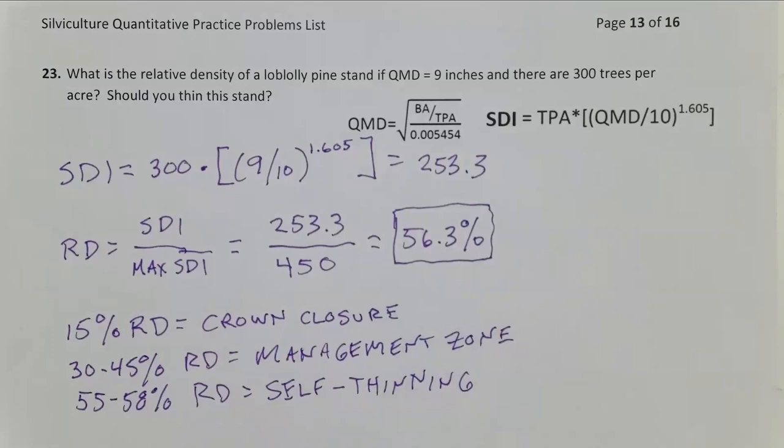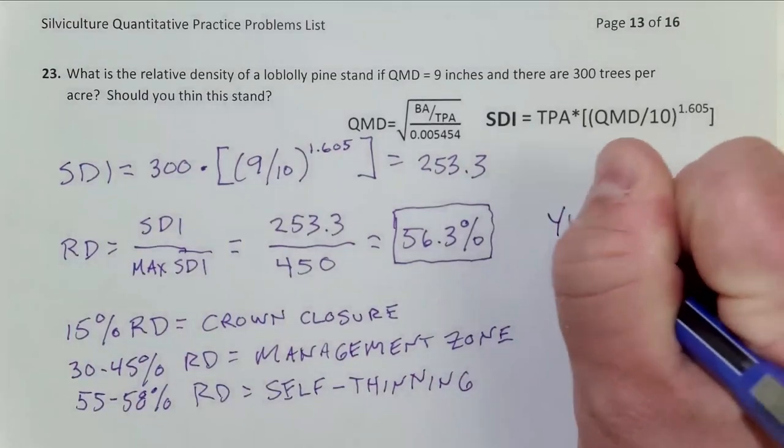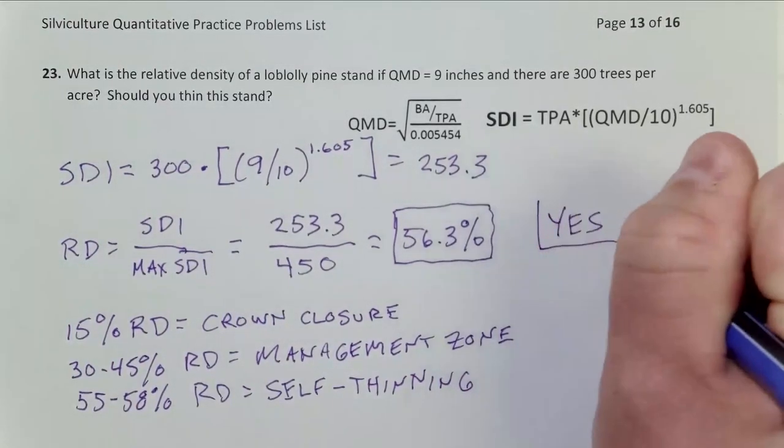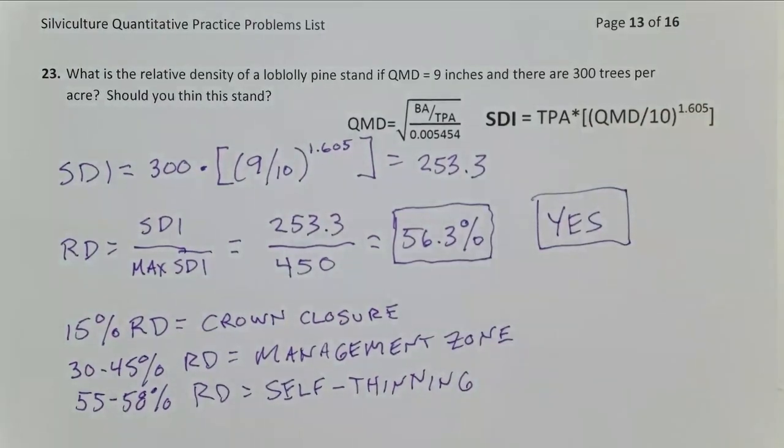And so we want to capture that mortality. We don't want a lot of mortality in our stand. We'd rather put it on a log truck and send it to the mill. So should this stand be thinned? Yes. We should thin this stand in order to prevent density-dependent mortality.